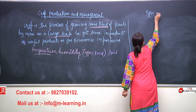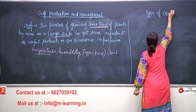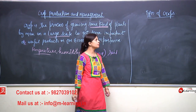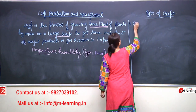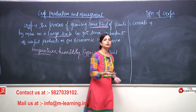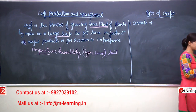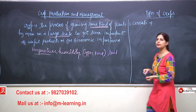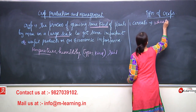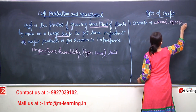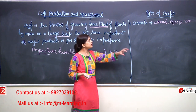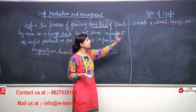I will be dealing with the types of crops first of all. I would like to talk about cereals. What are cereals? These are the food grains. What can come in this? Wheat, maize, rice, bajra, jwar — all these come under the category of cereals.